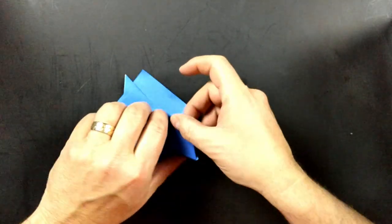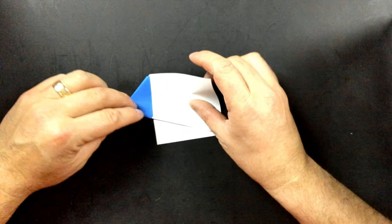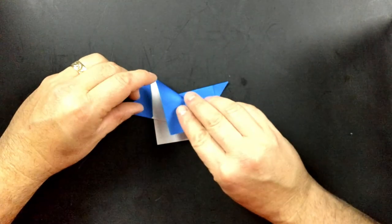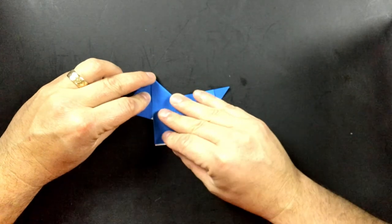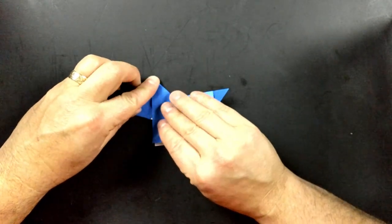Then we're going to fold the other side exactly the same way. Remember this is going to be the head. Then you see the tail in the back. And we're just about done.